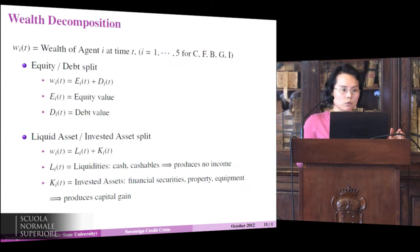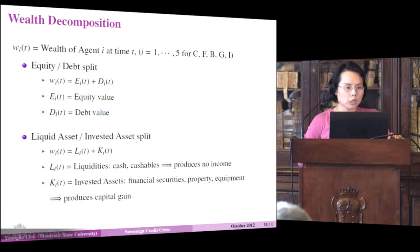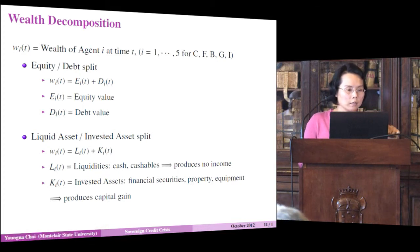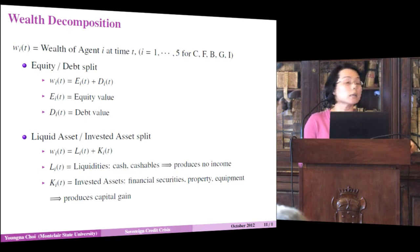Going back to the single economy: we decompose the worth of an agent I at time T as W_I(T). The lower index denotes the agent, numbered 1 to 5 for the domestic agents C, F, B, G, I.